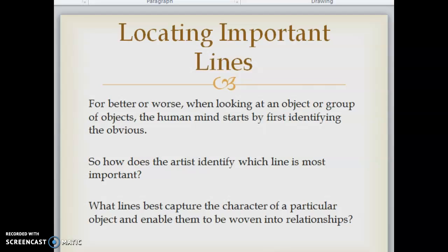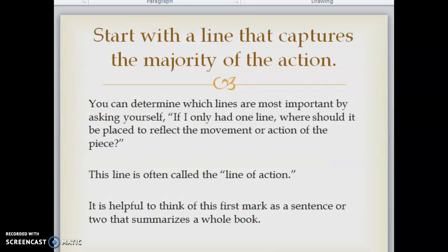For better or worse, when looking at an object or a group of objects, the human mind starts by first identifying the obvious. So how does the artist identify which line is most important? What lines best capture the character of a particular object and enable them to be woven into relationships? Start with a line that captures the majority of the action. You can determine which lines are most important by asking yourself, if I only had one line, where should it be placed to reflect the movement or action of the piece? This line is often called the line of action.